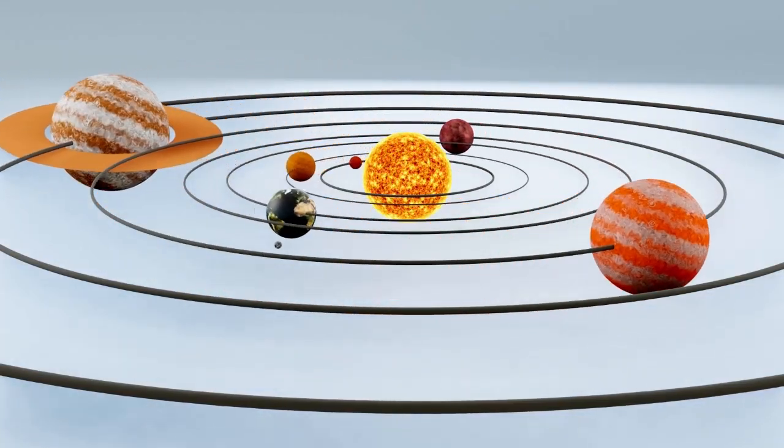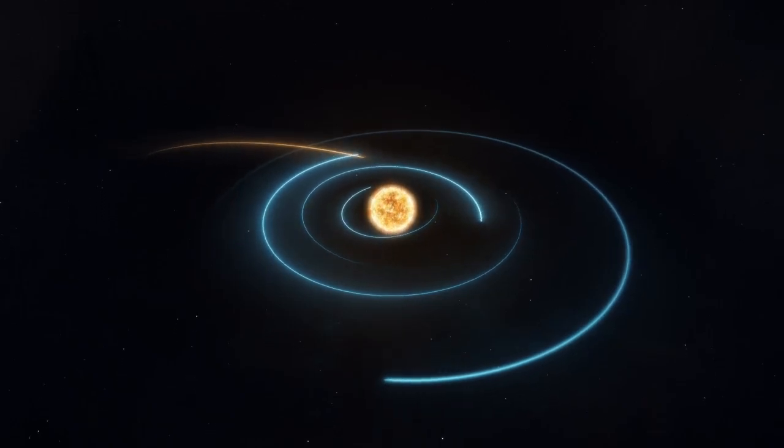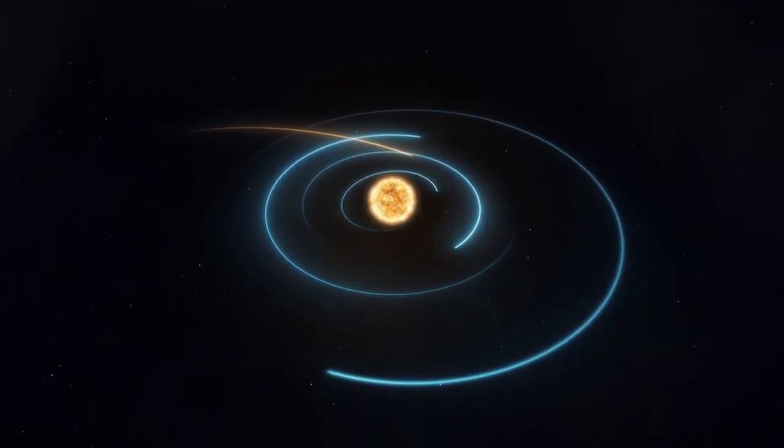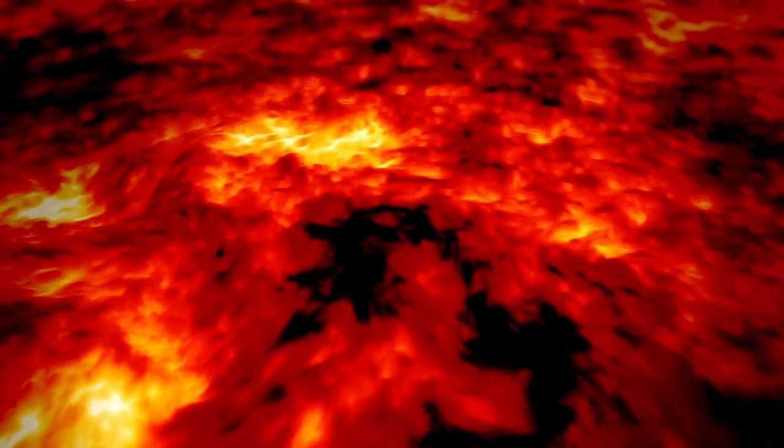If we could somehow set foot on Kepler-70b, hypothetically, with some unimaginable future technology, we wouldn't be able to describe what we'd see in any earthly terms. The ground would glow like hot iron, liquid rock bubbling beneath your feet.